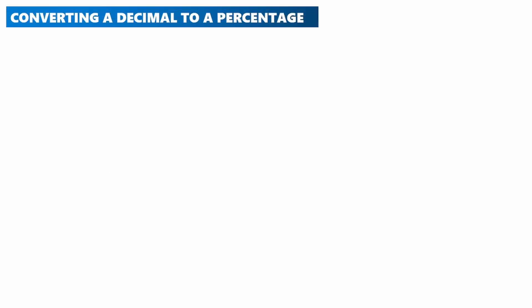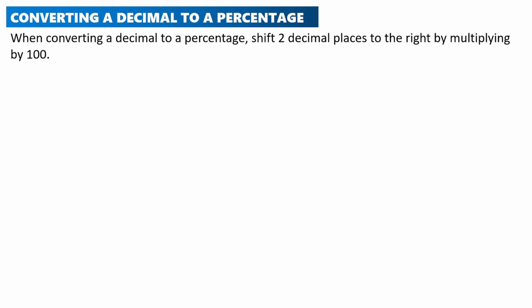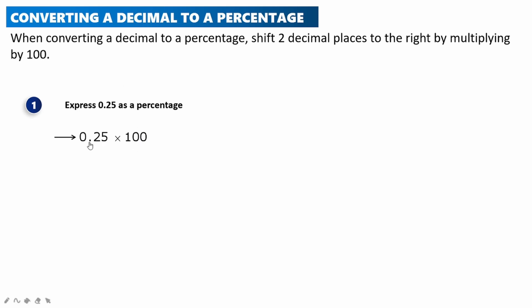Finally, let's look at how to convert a decimal to a percentage. When converting a decimal to a percentage, shift the decimal point two places to the right by multiplying by 100. For example: express 0.25 as a percentage. We shift the decimal point to the right twice — so 0.25 times 100.